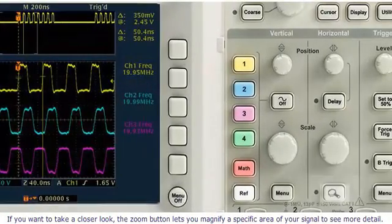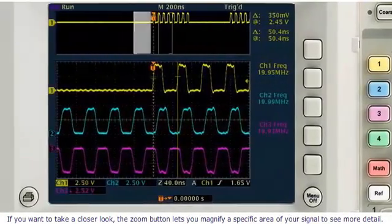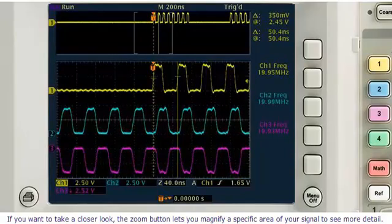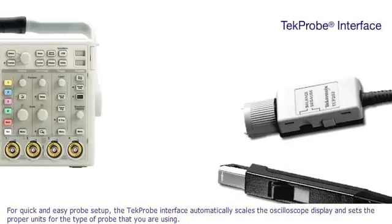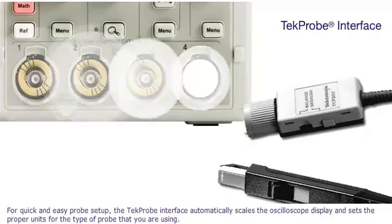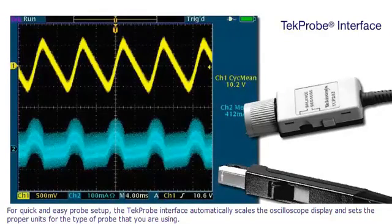If you want to take a closer look, the zoom button lets you magnify a specific area of your signal to see more detail. For quick and easy probe setup, the TechProbe interface automatically scales the oscilloscope display and sets the proper units for the type of probe you're using.